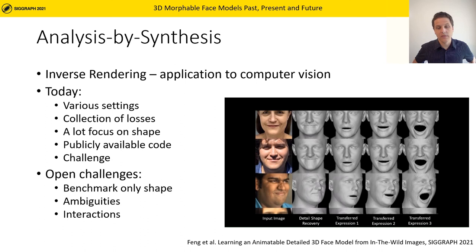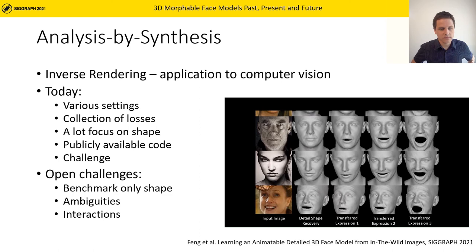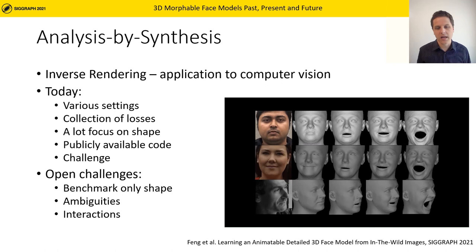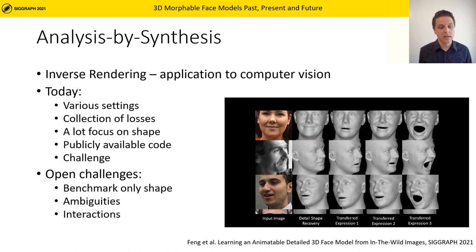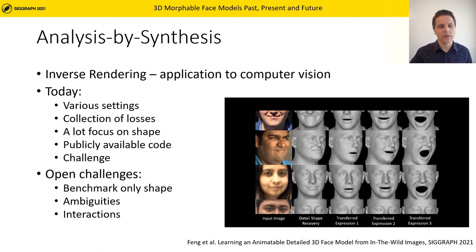It remains a challenge to evaluate full inverse rendering beyond shape reconstruction, as we lack ground-truths in real-world settings. The 3D-from-2D estimation is an ill-posed problem, and some ambiguities can't be resolved with current modeling priors. Also, several faces in a scene are currently inferred independently — the interaction between people is not yet taken into account.